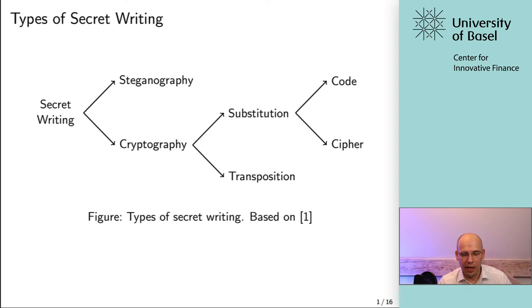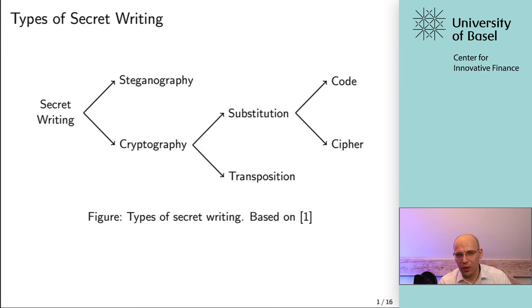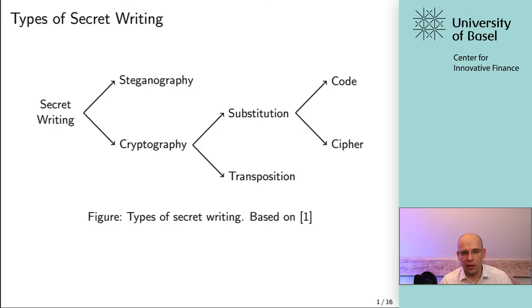They know that the information is here — you can observe that there is some text — but the text doesn't make any sense if you don't have the secret, if you don't know how to decrypt it. With steganography, it's a little different. An observer is not aware of the fact that the information is on this piece of paper. It could be hidden in an image with a really small font, or you could use magic ink that you have to uncover with a certain method. Here, you really hide the fact that the information exists, and the information remains in plain text.